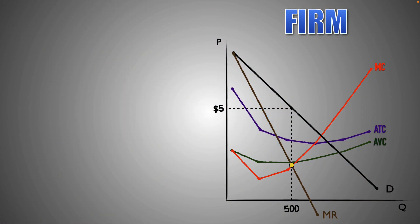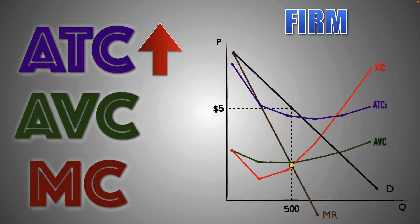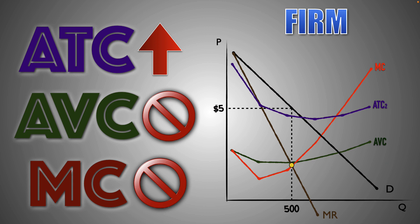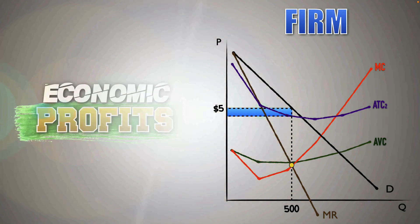On the other hand, suppose that insurance fees increase for the firm. The average total cost increases at every output level, which will be visualized with an upward shift of the ATC curve. Again, because fixed costs have no influence on average variable cost or marginal cost, the AVC and MC curves will not shift, and the firm's profit maximization point will remain the same. As a result, the quantity of output produced by the firm will not change, and the firm's total revenue will stay the same, but the firm will earn fewer economic profits because total costs have risen.